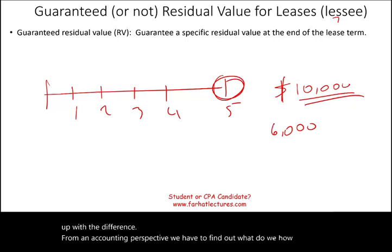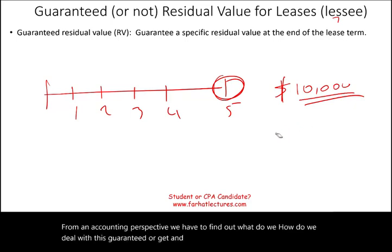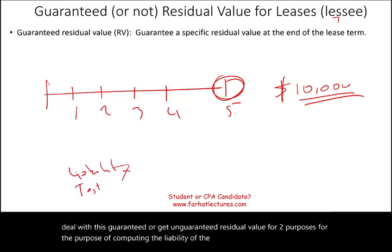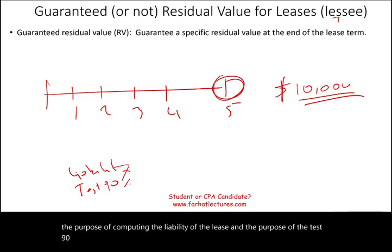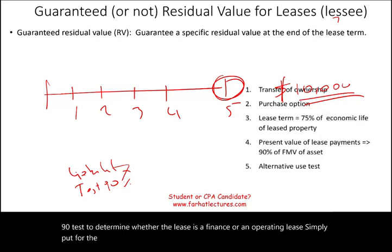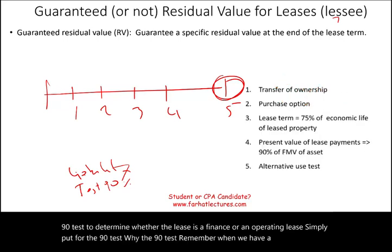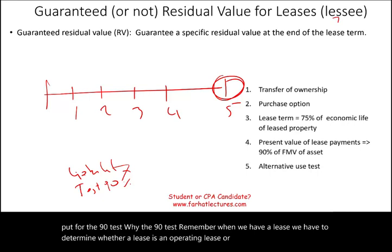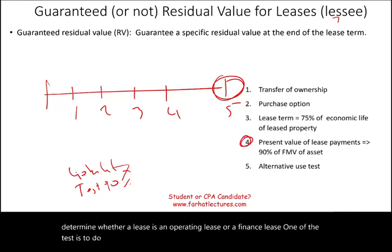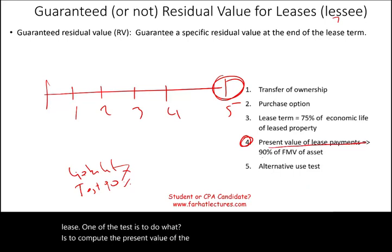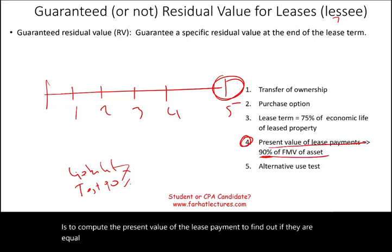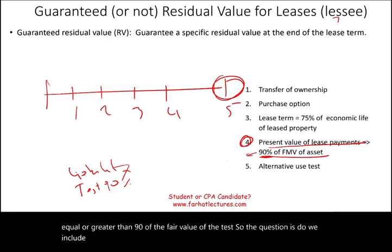From an accounting perspective, we need to understand how to deal with guaranteed or unguaranteed residual value for two purposes: computing the lease liability, and the 90% test to determine whether the lease is a finance or an operating lease. For the 90% test, we compute the present value of the lease payments to find out if they are equal to or greater than 90% of the fair value of the asset. The question is: do we include the residual value in that computation?